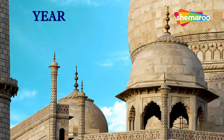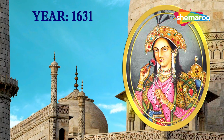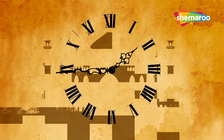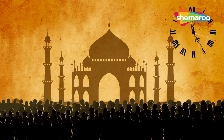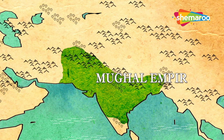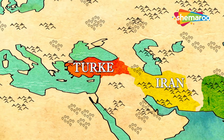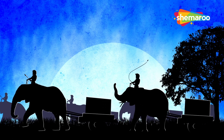It is said that construction began in 1631, just after the death of Mumtaz Mahal during childbirth. It took 22 years to build and used a workforce of more than 20,000 labourers and artists from the Mughal Empire as well as Iran, Constantinople, modern-day Turkey and even Europe. About a thousand elephants were also used to move construction materials.